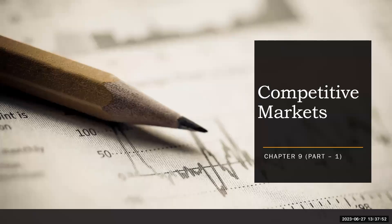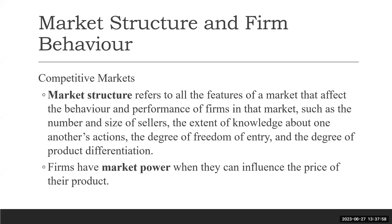Today our topic is competitive market. As I explained before, when we as a business person or firm decide about the price or quantity — how much to produce — we first need to consider which market we are operating in. Competitive market is one form of different types of markets. We will first define what a competitive market is, and then see how firms behave or interact in a competitive market.